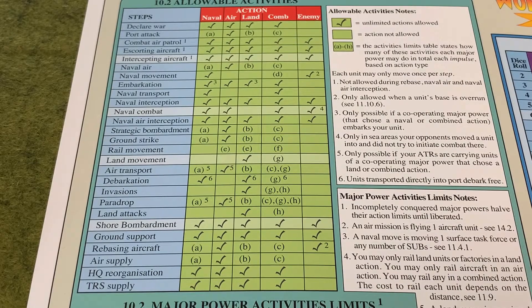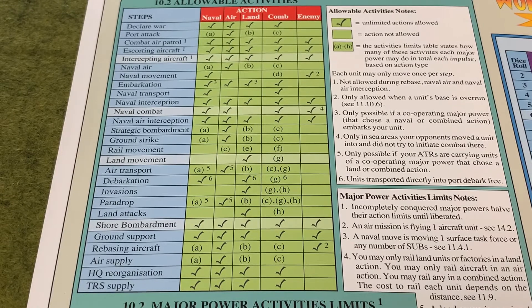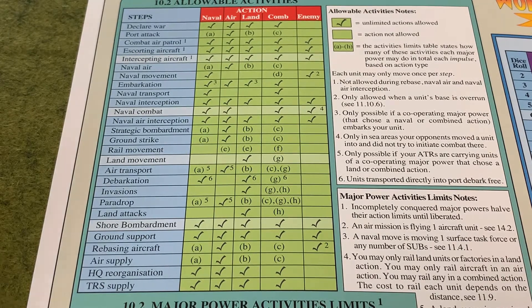The pass action is the simplest — it does just what it sounds like. When you choose the pass action, that major power will be unable to do any other activities for the rest of that impulse. The only two exceptions are: if you have naval units already at sea in a sea box and a naval combat is initiated by someone else involving those units, your units will fight in that combat. Likewise, if you have ground or air units being transported by an allied major power that returns to base, your units will be transported back to port.